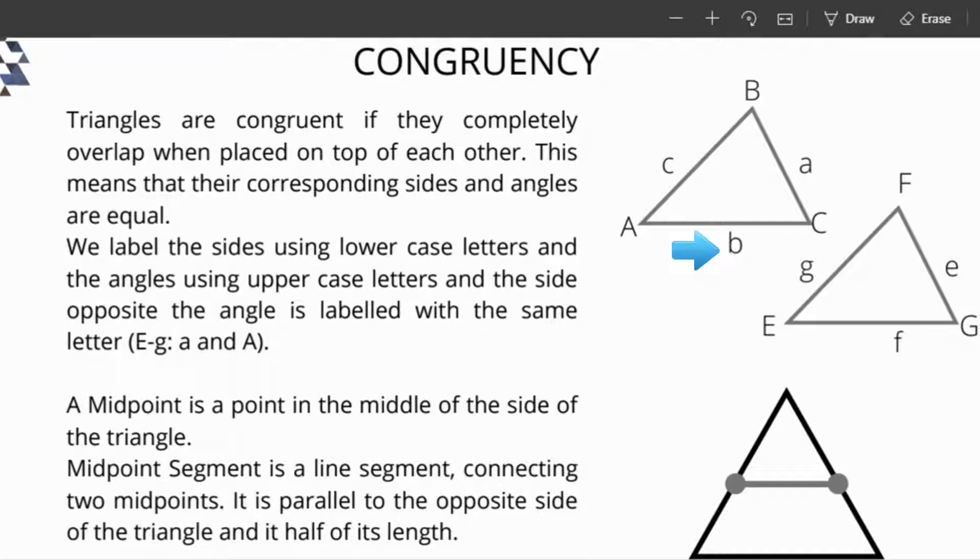We'll label the sides using lowercase letters and label the angles with the same letter opposite the corresponding side. A midpoint is in the middle of the side of the triangle. A midpoint segment is a line segment connecting two midpoints. It's parallel to the opposite side of the triangle and is half of its length.